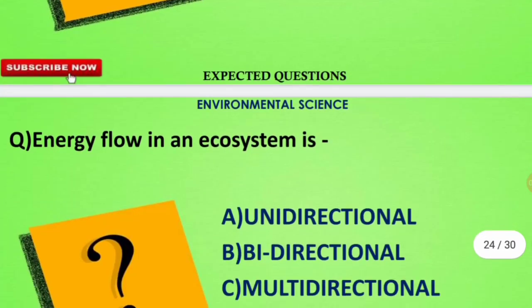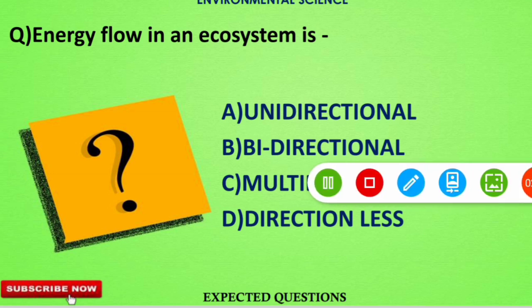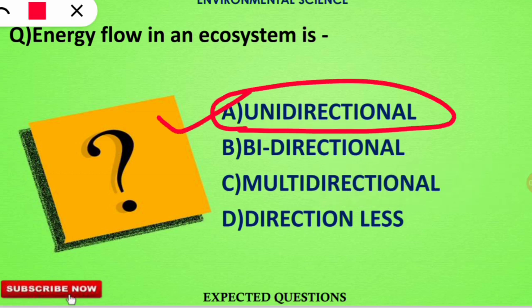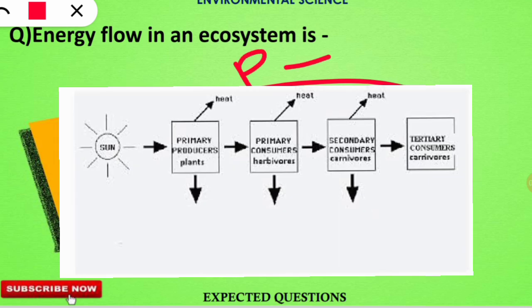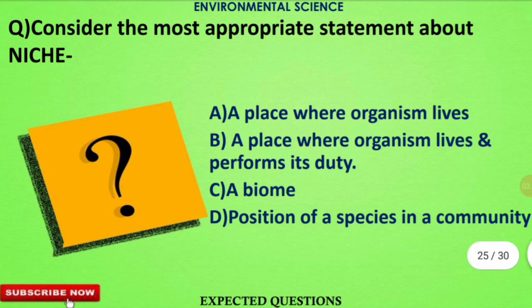The next question asks: what is the nature of energy flow in an ecosystem? This is a straightforward ecology question. The correct option is A — energy flow is unidirectional in nature. Energy moves in a single direction from producers (plants) to primary consumers and then to higher consumers; it does not flow in reverse.